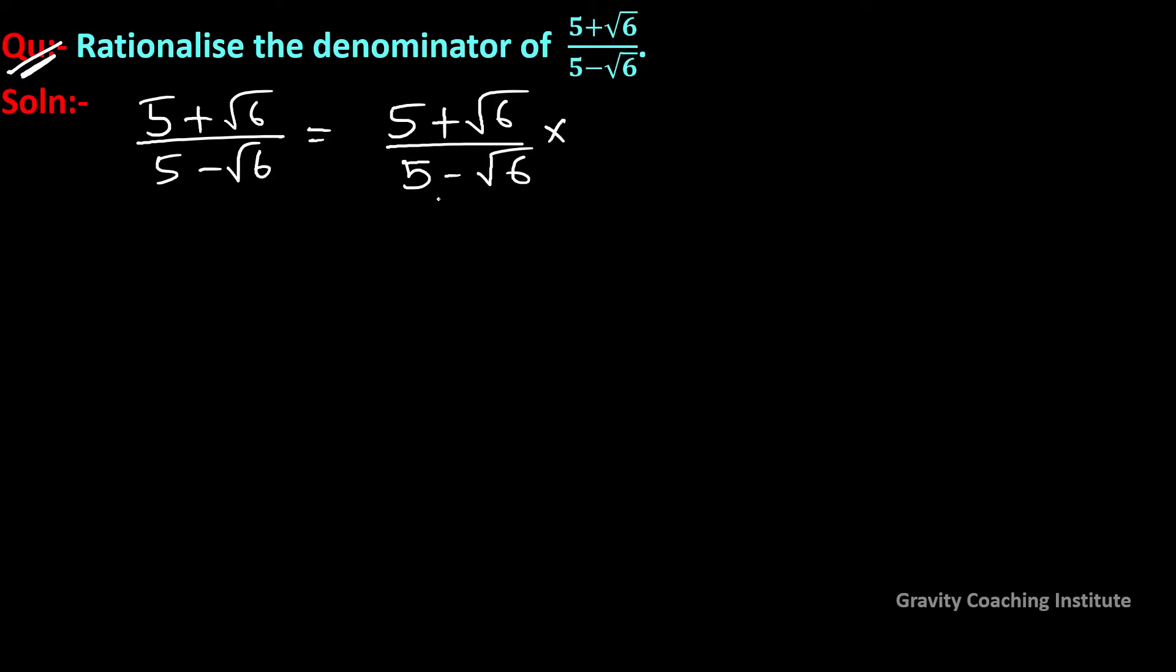To rationalize the denominator, which is 5 - √6, we need to multiply the denominator by 5 + √6, the opposite sign. So we multiply both numerator and denominator by 5 + √6.